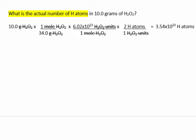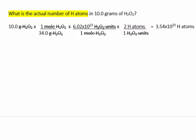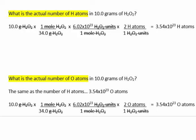What is the actual number of hydrogen atoms in 10 grams of H2O2, or hydrogen peroxide? Start with 10 grams, divide by the molar mass of H2O2 which is 34, multiply by Avogadro's number, then take into consideration the ratio of H atoms per formula unit — there are two atoms for every one unit. Multiply by 2 to get 3.4 times 10 to the 23rd hydrogen atoms. If you were asked for the actual number of oxygen atoms in that same quantity of hydrogen peroxide, the answer would be exactly the same.